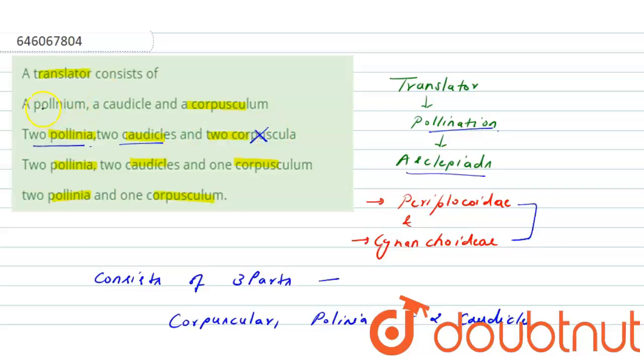Here it is two corpuscula, so this is incorrect. First option is a pollinium, so this is incorrect because there are two pollinia. Next option is two pollinia, two corticles and one corpusculum. So this option may be the correct one and the last option is also incorrect. So the correct answer is option number C.